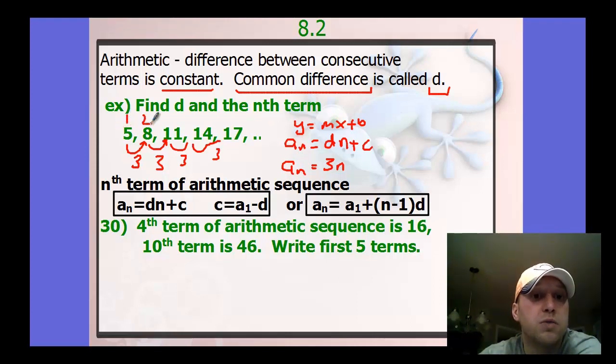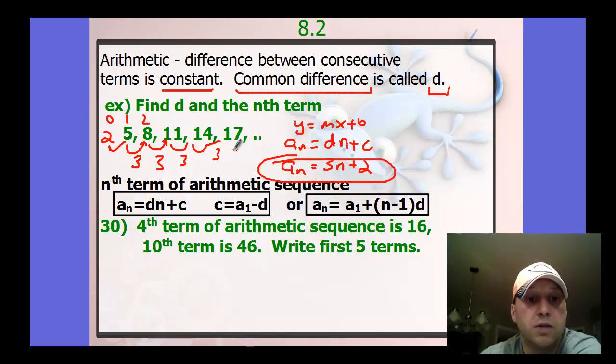And then our C value is term 0. So if this is term 1, term 2, we need to go backwards 1 to get to term 0. So subtract 3 and we get to 2. So it would be plus 2. This would be the general rule for that pattern.